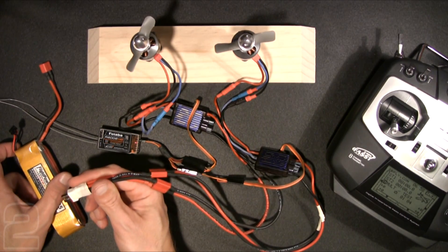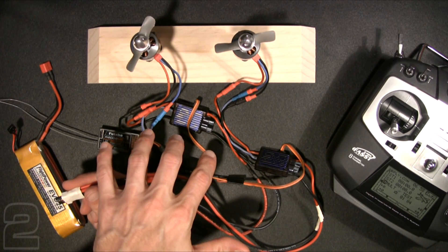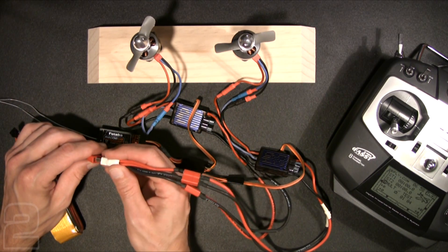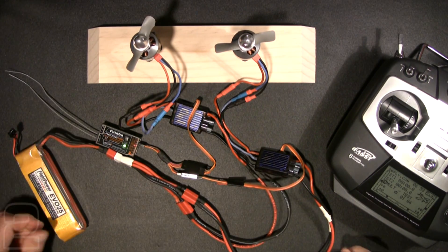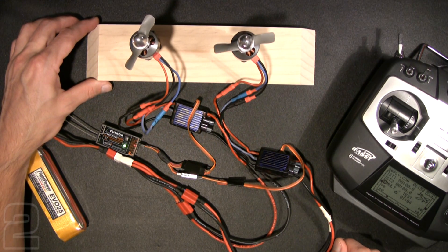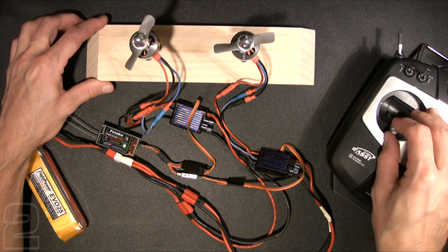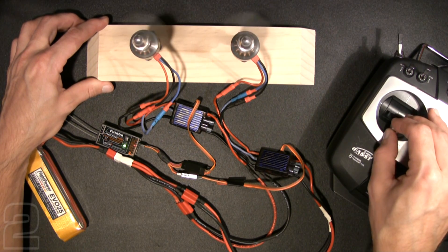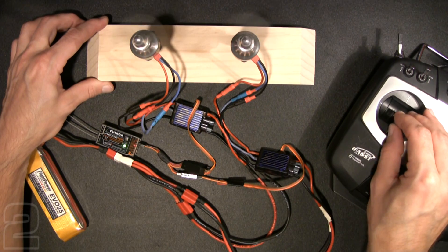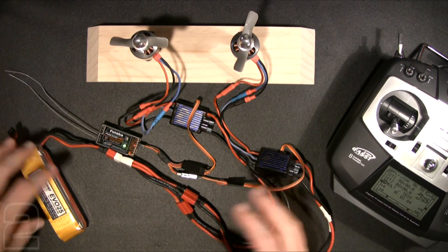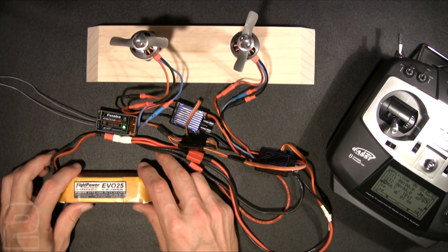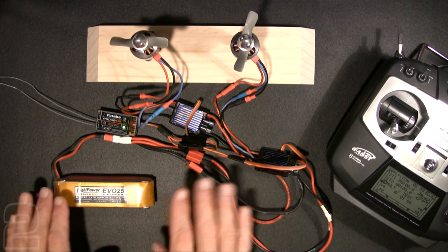So now we have a Y harness providing power to both of our ESCs. And we're going to go ahead and connect our flight battery with our transmitter still on. All right, both of them twitched, both of them armed. And we have two functioning motors turning against each other. So that's essentially a basic multi-engine setup on electric RC aircraft using two ESCs.